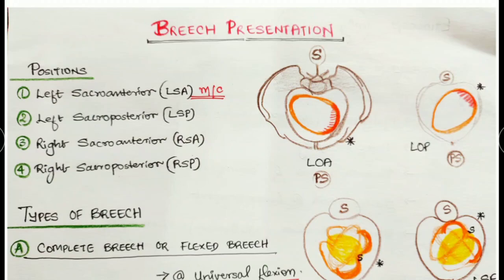Breech presentation is an abnormal lie of the fetus in the uterine cavity. That is, instead of a normal cephalic presentation where the head comes first out of the vagina, in breech presentation the buttocks or the legs of the fetus are presenting first.